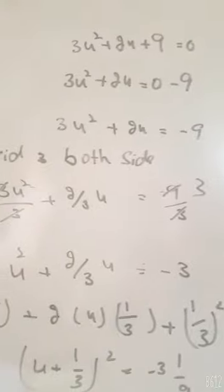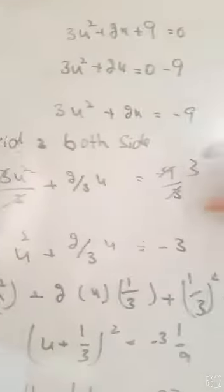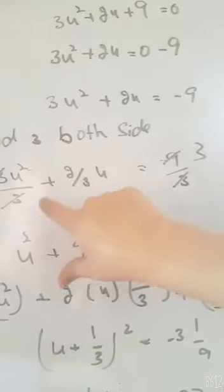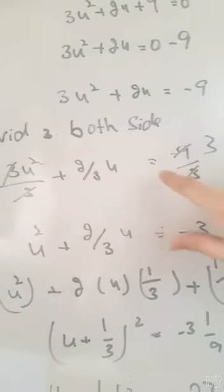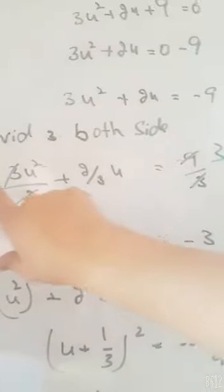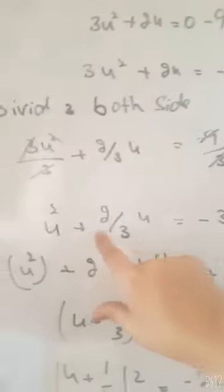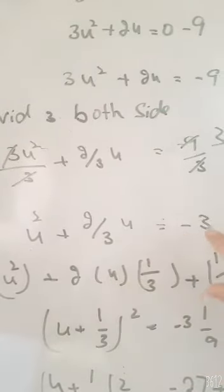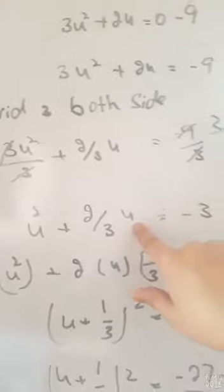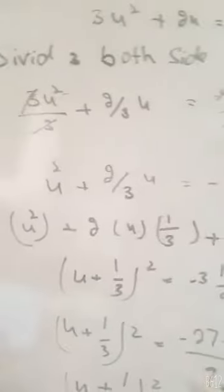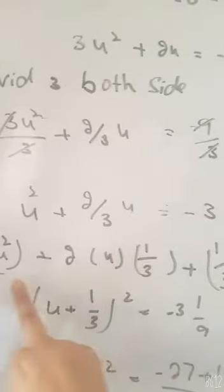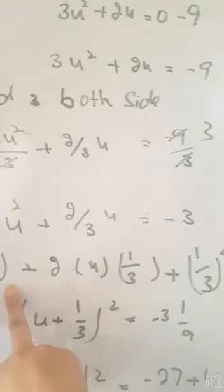Then we will divide by 3 because we have 3x². So (3x² + 2x)/3 = -9/3. This gives us x² + (2/3)x = -3. Then we have to use the same formula which I told you, a² + 2ab + b².